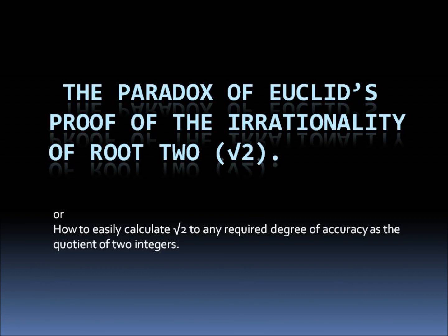The paradox of Euclid's proof of the irrationality of root 2, or how to easily calculate root 2 to any required degree of accuracy as the quotient of two integers.